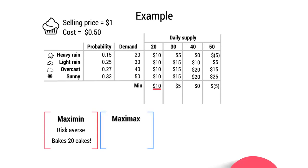What about the maxi-max approach, favored by the risk seeker? They look for the highest possible result — only concerning themselves with the best possible outcome, regardless of how small the chances of it occurring or how much loss they might make. They just focus on the maximum profit. The maximum profit occurs when producing 50 cupcakes, so the risk seeker will bake 50 cupcakes.